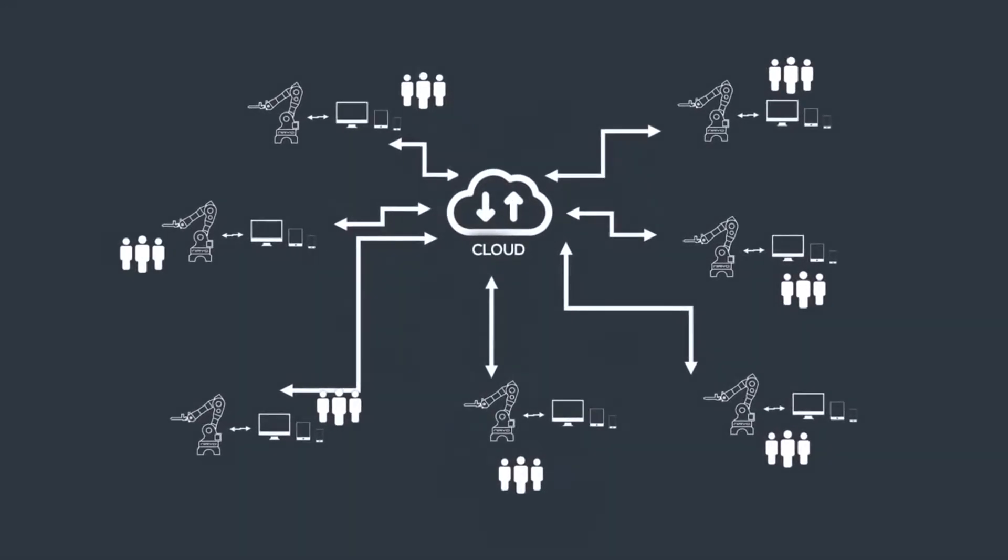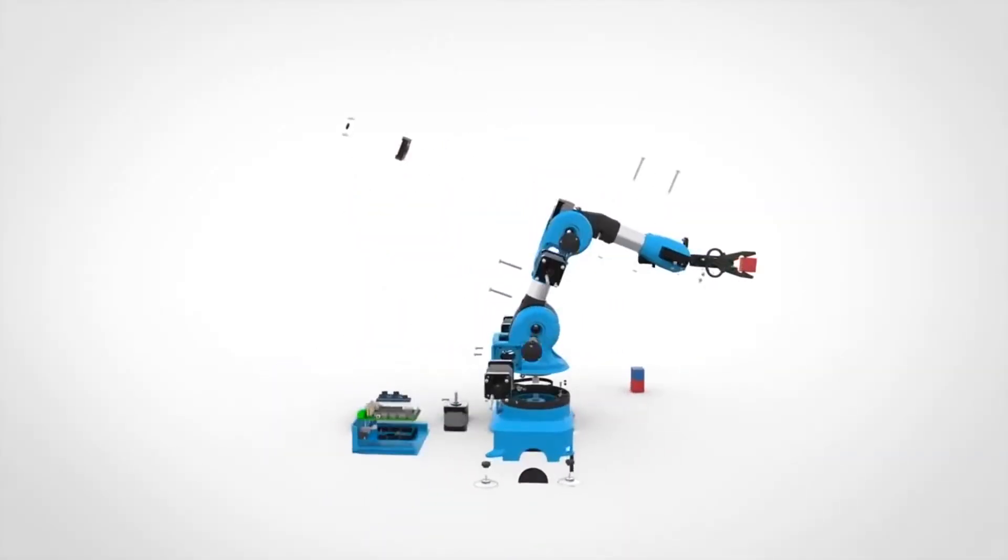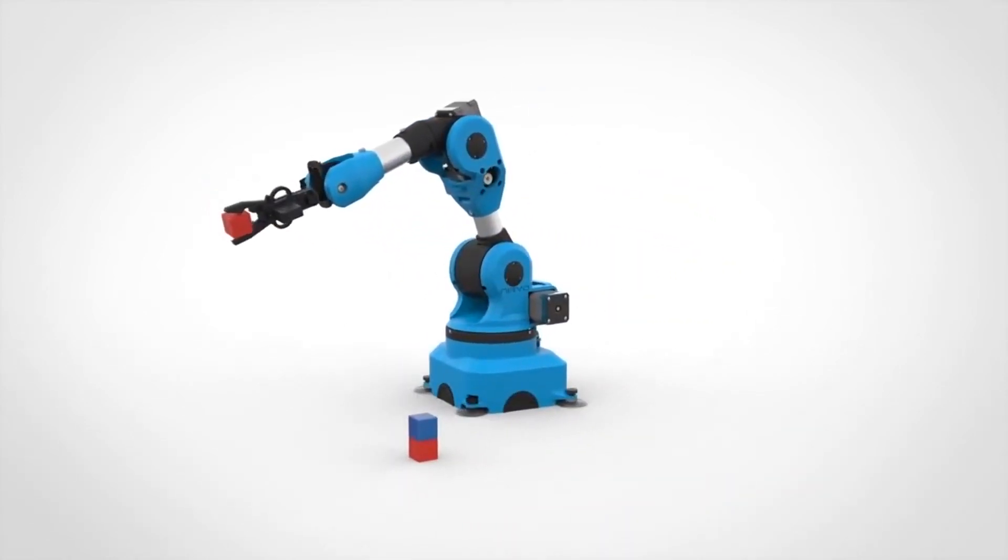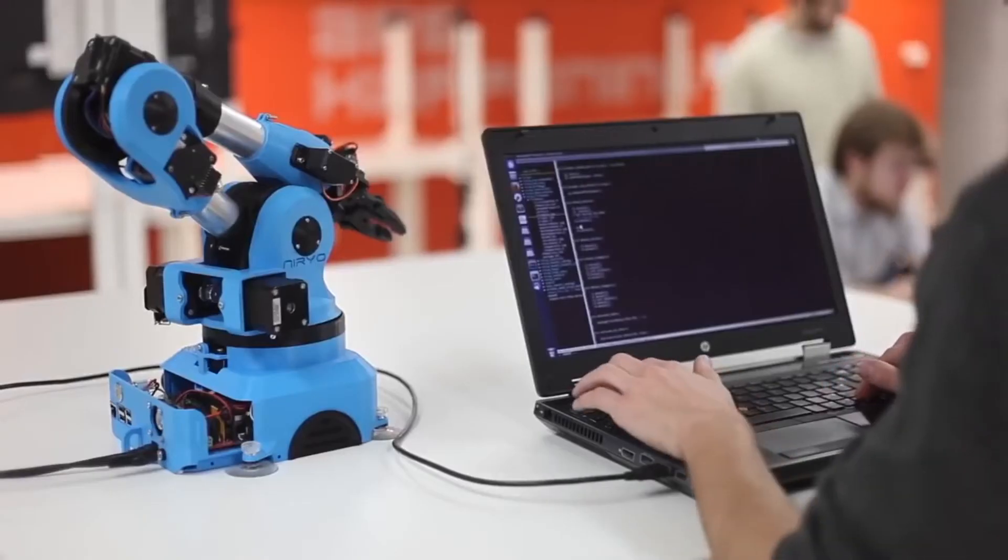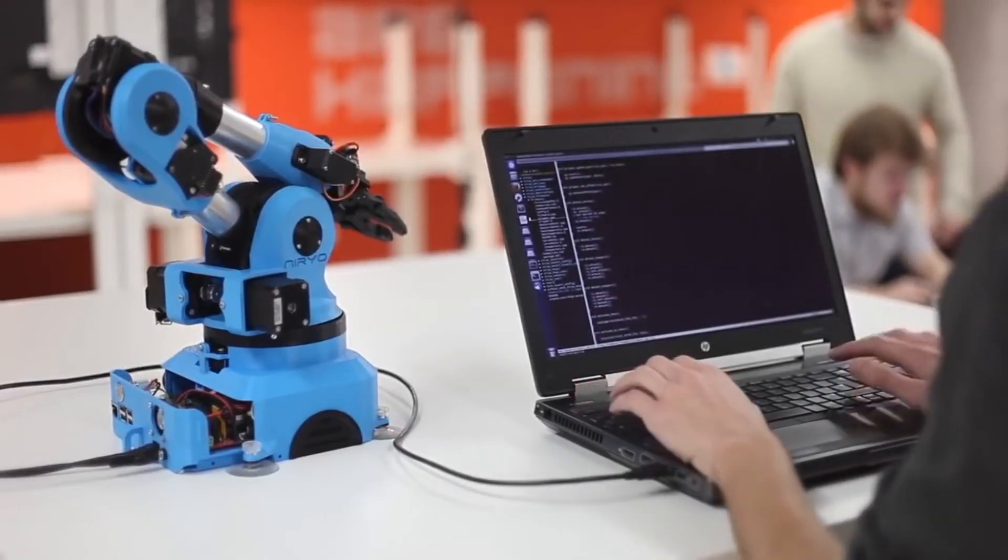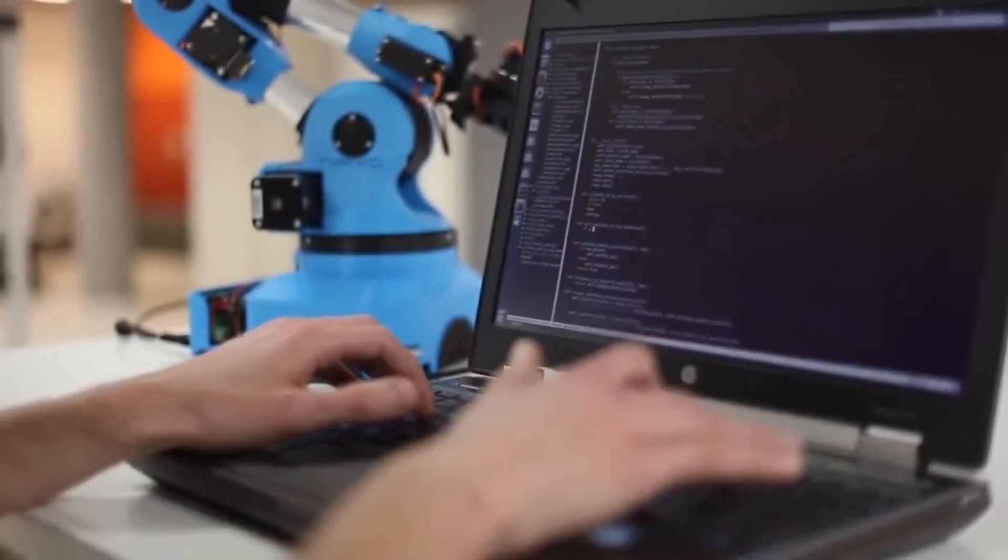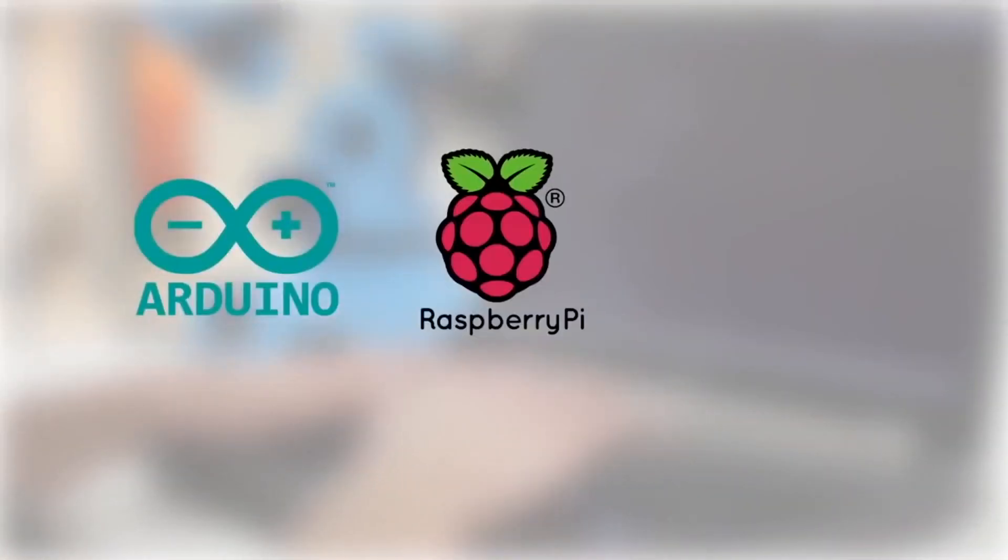We specially thought about makers and developers by making most of our code open source. STL files for 3D printing will also be released. You will be able to program directly on the robot with many APIs and the source code. It's a great way to learn robotics and do useful stuff with Arduino, Raspberry Pi, and robot operating system.